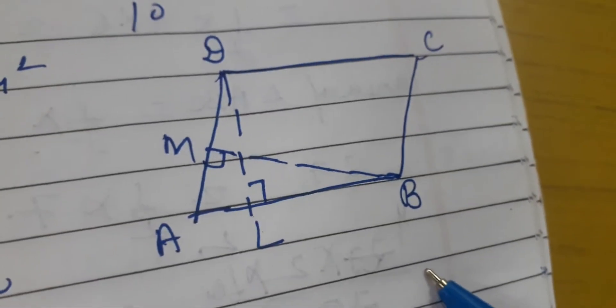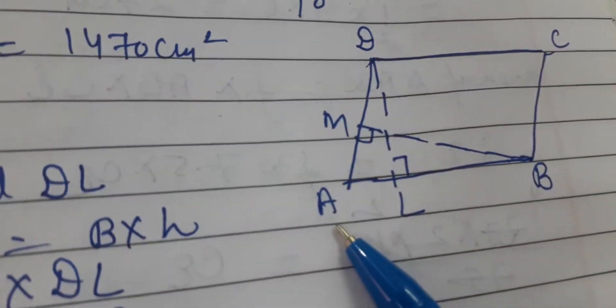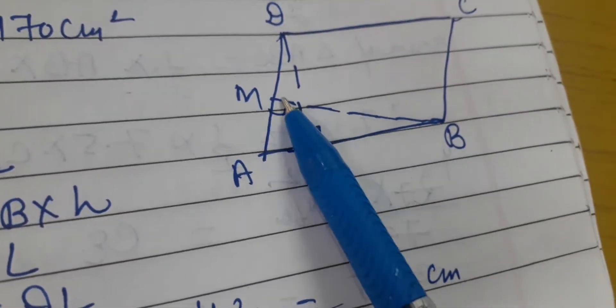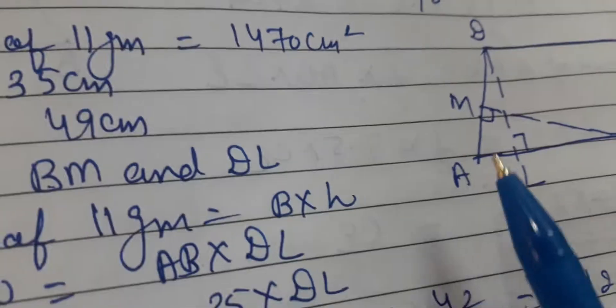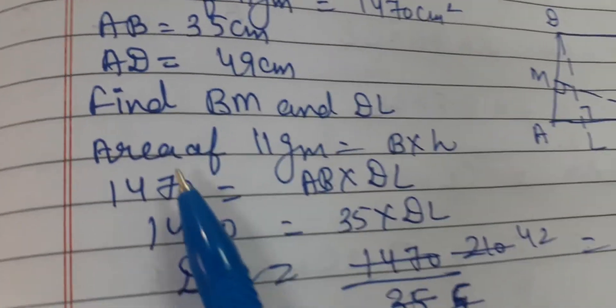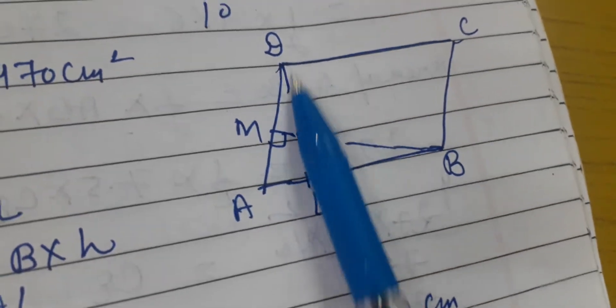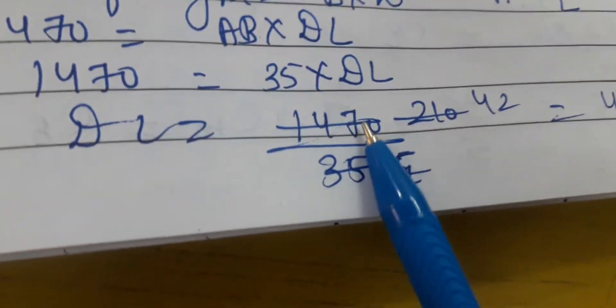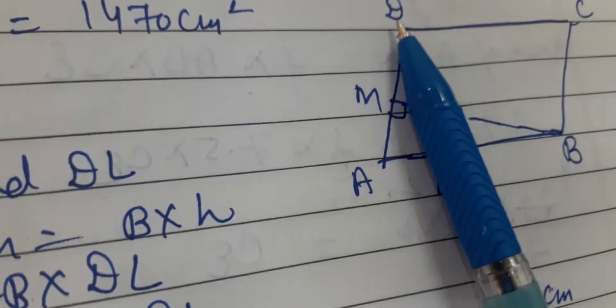In question six, the area of the parallelogram is given, AB is given and AD is given — look at this figure in your book. You have to find BM and DL: the heights of the parallelogram on each base. Using area of parallelogram equals base into height: 1470 equals AB multiplied by DL. AB is 35 cm, so DL equals 1470 divided by 35, which gives 42 centimeters. So on base AB of 35 cm, the height DL is 42 cm.